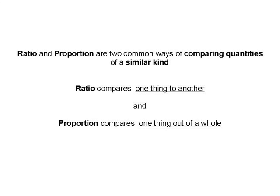Ratio and proportion are two common ways of comparing quantities of a similar kind. Ratio compares one thing to another, and proportion compares one thing out of a whole.